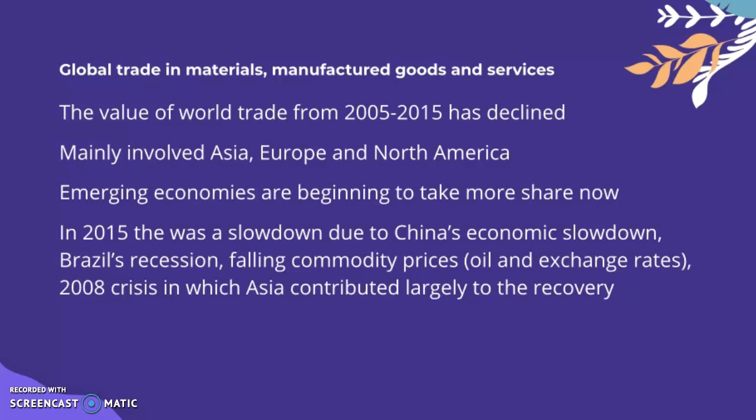Looking at global trading materials, manufactured goods and services: the general trend is that the value of world trade from 2005 to 2015 has declined. Trade mainly involves Asia, Europe, and North America. Emerging economies are beginning to take more share. In 2015 there was a slowdown due to China's economic slowdown, Brazil's recession, falling commodity prices impacting oil exchange rates, and the 2008 crisis.